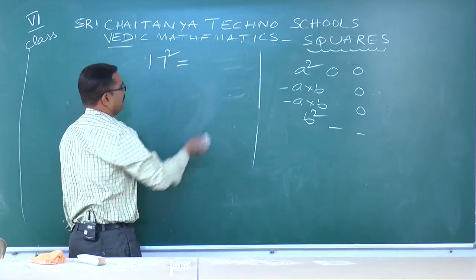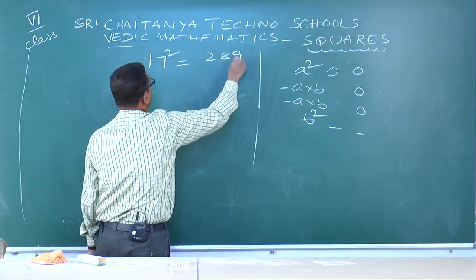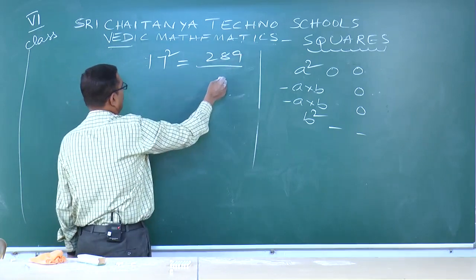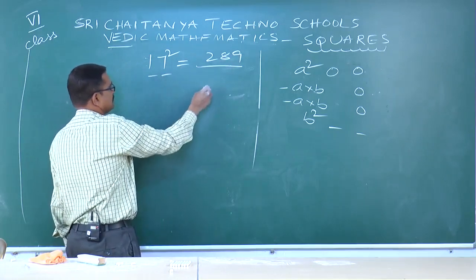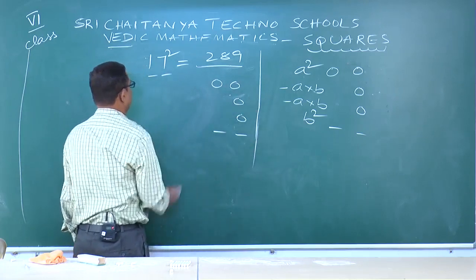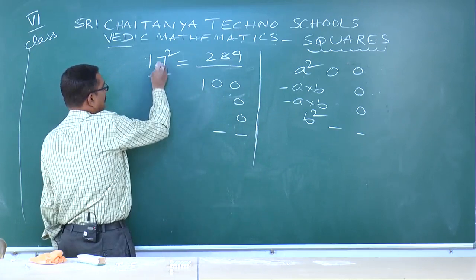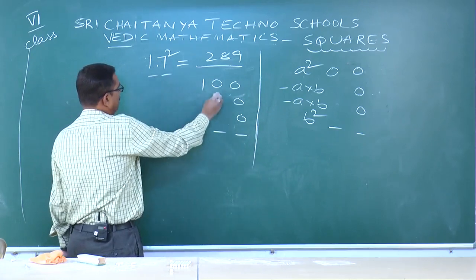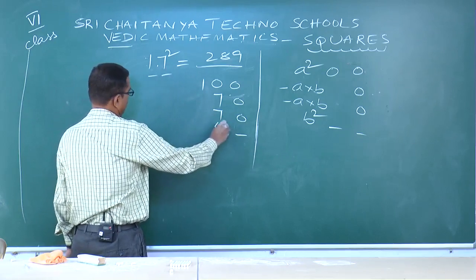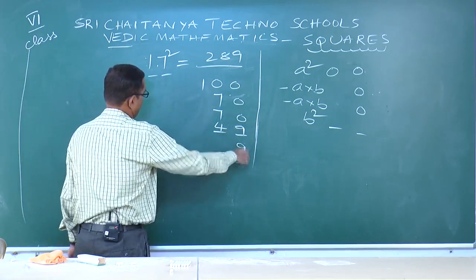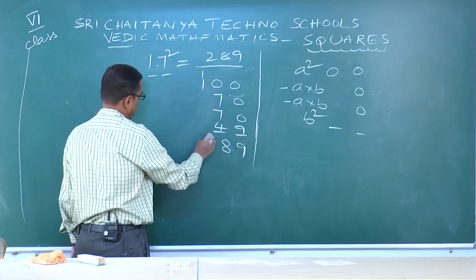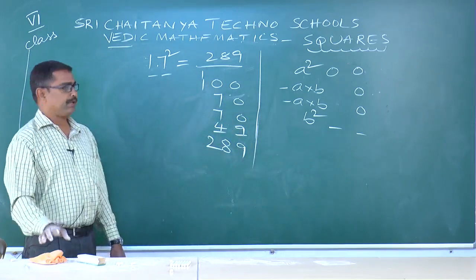Next: 17² = 289. Here a=1, b=7. Use formula: a²=1²=1, a×b=1×7=7, a×b=7 again, b²=7²=49. Add all — answer is 289.